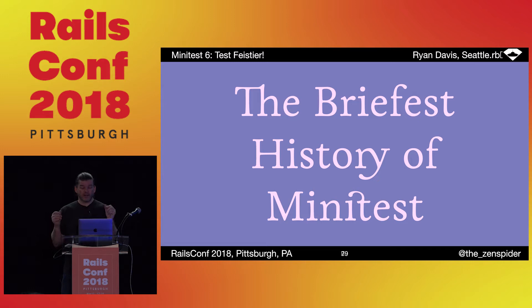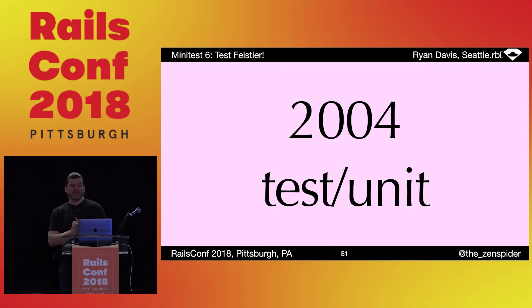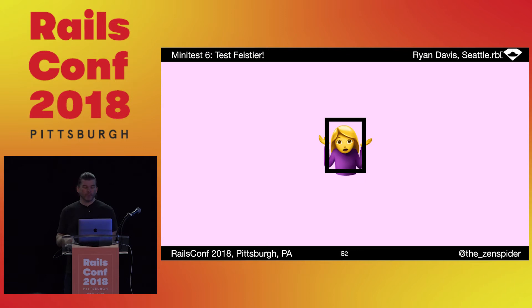Now, with that out of the way, let's do the briefest history of Minitest I can muster. I became the maintainer of test/unit that shipped in Ruby's standard lib in about 2004. It was big. It was complex. I just didn't understand it, and quite frankly I was scared of it — especially as a new maintainer with core commit bit. That was terrifying.